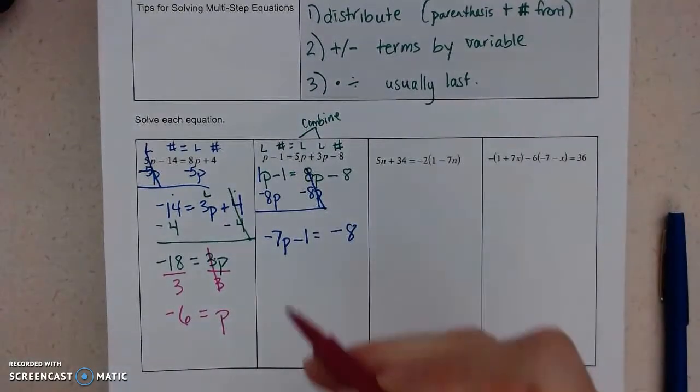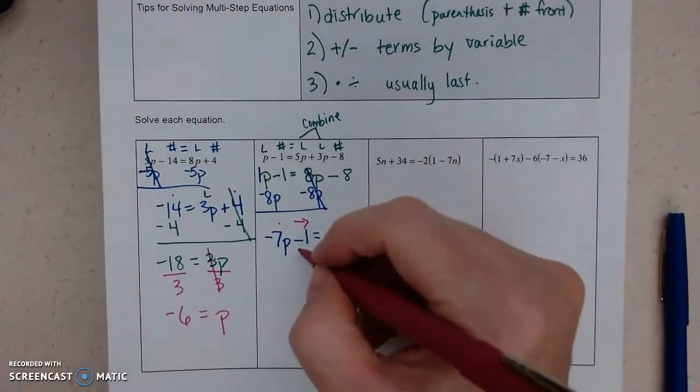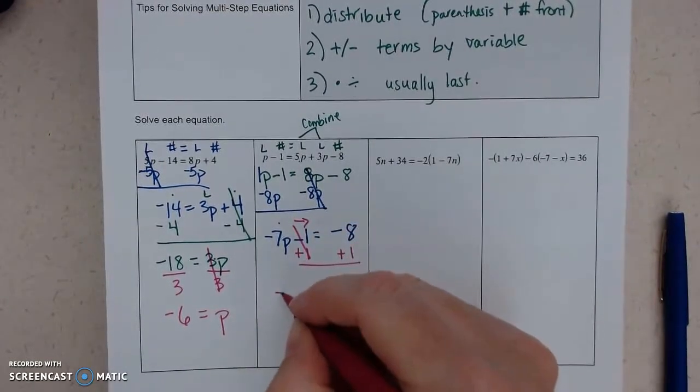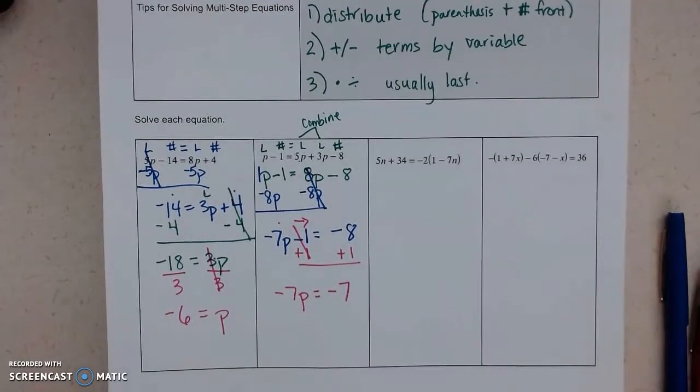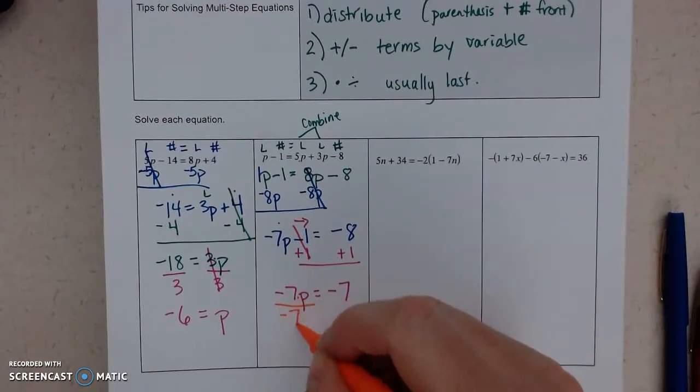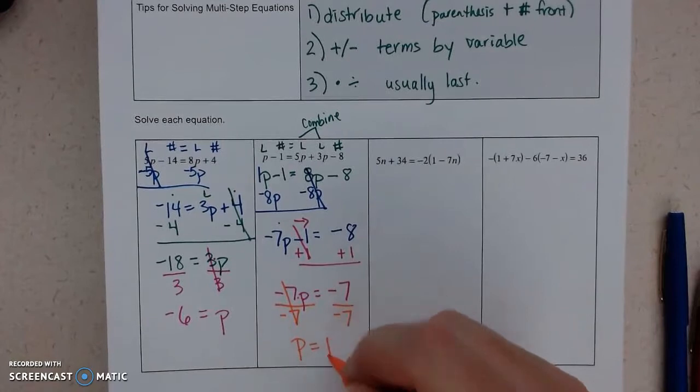So now, my letters on the left, I have to move the number to the right side. So we're going to add 1. So negative 7P equals negative 7. And our last step, these are being multiplied, so I divide by the same number I want to move. So P equals positive 1.